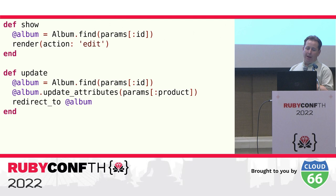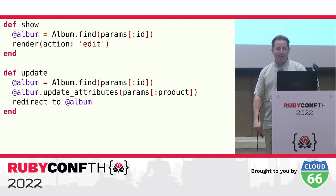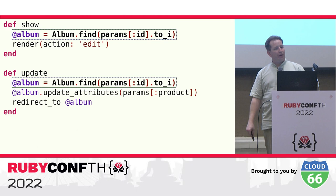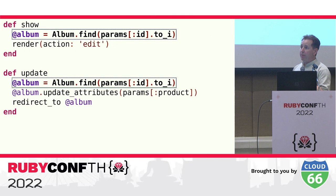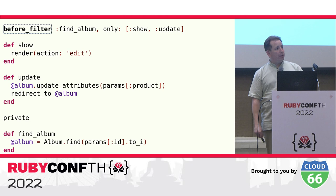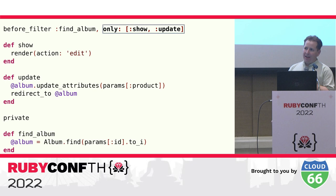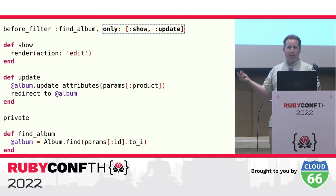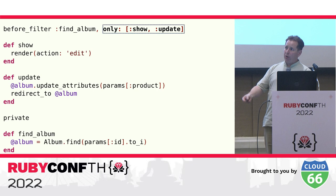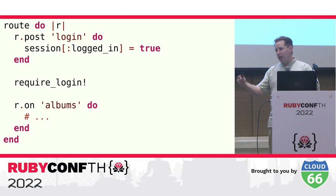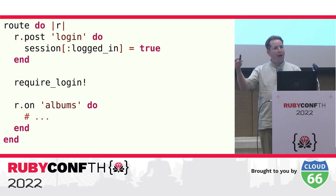In Rails, routes are specified in config/routes.rb and the handling code goes in a separate controller class in a separate file. The separation of routing code and controller code adds significant conceptual overhead since it takes more work to figure out where the code that handles the route will be located. Rails also offers a way to eliminate redundant code using a before filter, but if you want to add more routes you need to manually update the 'only' option. Just like Sinatra, the shared behavior is in a separate lexical scope, making it more difficult to understand how it connects to the route handling methods.